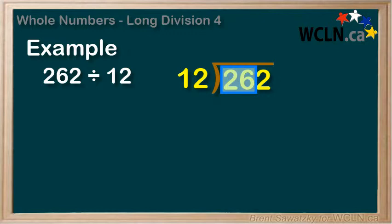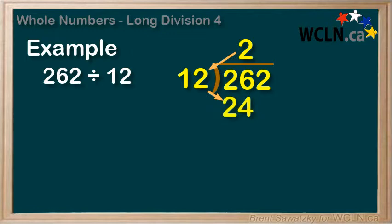So the 2 goes above the 6, as we're working on the 26 in this case, and 2 times 12 is 24. And that goes below the 26. And we're ready to subtract. 26 minus 24 equals 2.